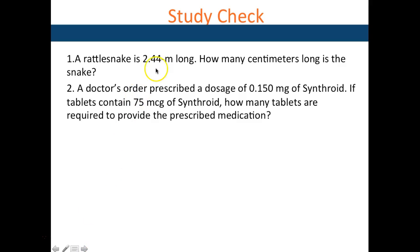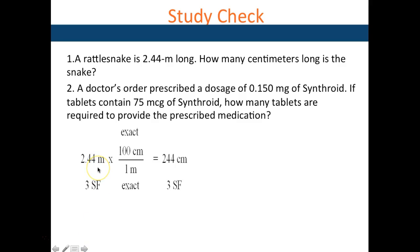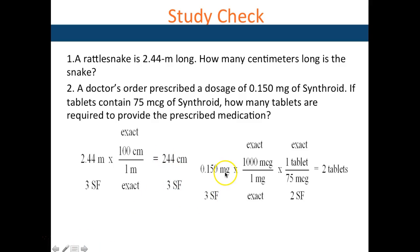A rattlesnake is 2.44 meters long — converting to centimeters gives 244 centimeters, three sig figs. A doctor prescribes 0.150 mg of Synthroid; each tablet contains 75 mcg. First convert 0.150 mg to micrograms, then use micrograms per tablet to find two tablets.